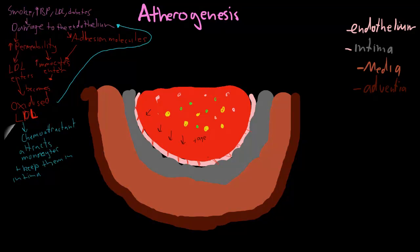So the cholesterol comes in to the intima and it also brings in monocytes from the blood. At a similar time this LDL is becoming oxidized LDL — I'll draw it in red to signify that it's oxidized. This oxidized LDL causes further damage and brings in even more monocytes, which turn into macrophages.